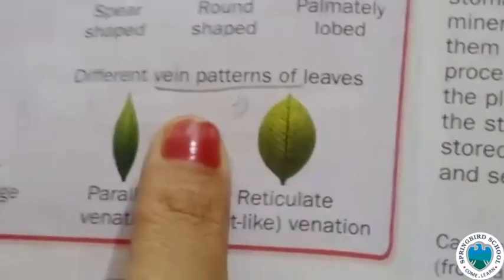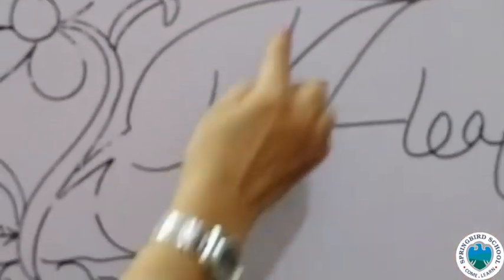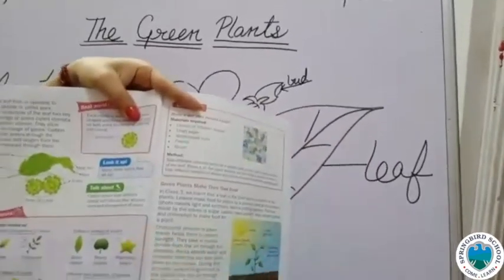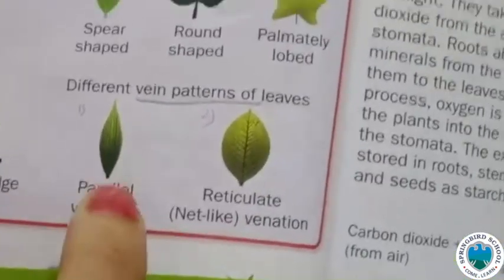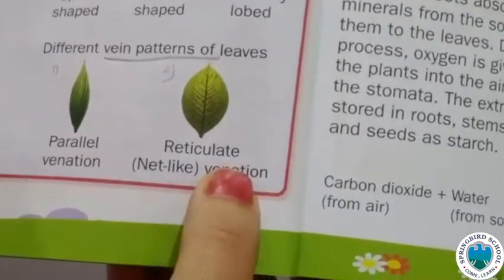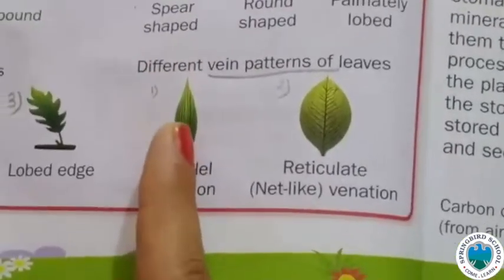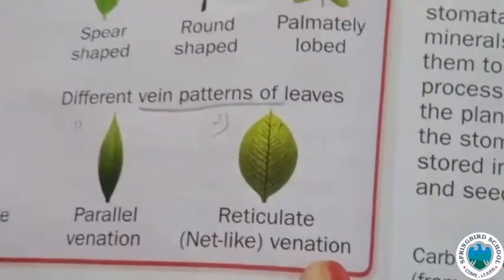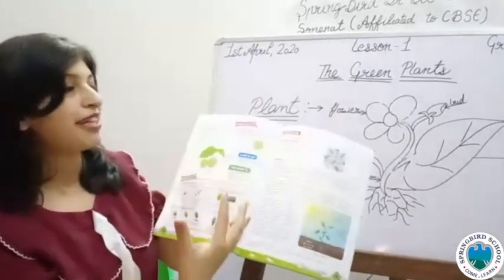Now let's look at the different vein patterns of leaves. Based on vein design, leaves are divided into two types: parallel venation and reticulate venation. In parallel venation, the veins run straight, while in reticulate venation, you see the veins distributed in a network pattern. So today we have read about the leaf and the different arrangements of leaves.